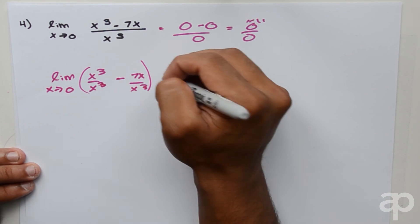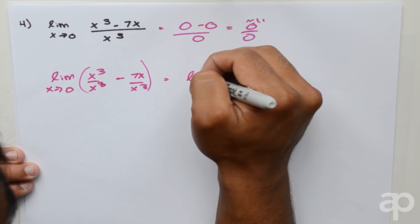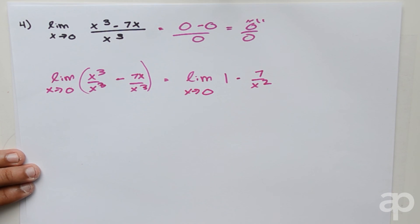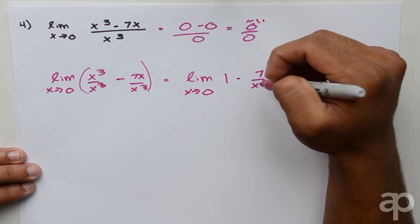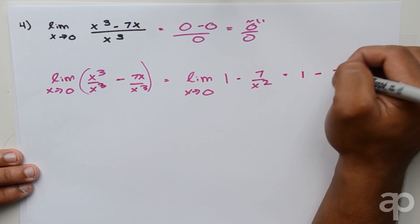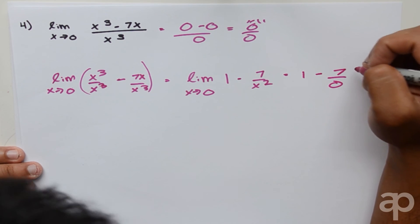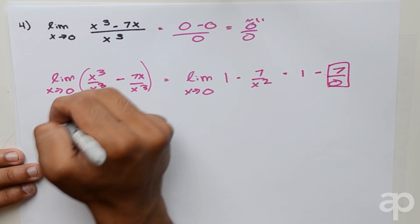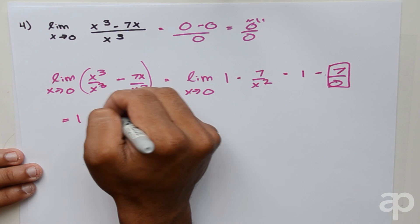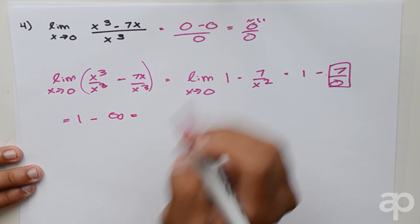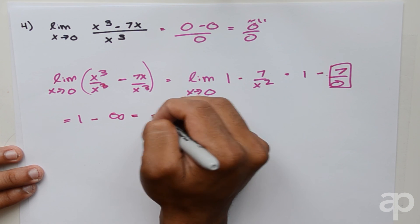Simplifying gives us the limit of 1 minus 7 over x squared as x approaches 0. Plugging in 0 for x gives us 1 minus 7 over 0. Since anything over 0 is infinity, we have 1 minus infinity. Because infinity is such a large number, 1 minus infinity equals negative infinity.